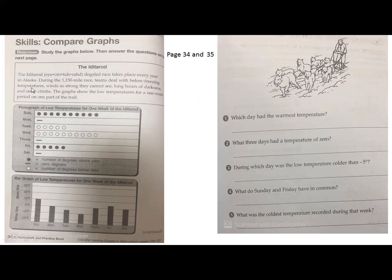Study the graphs below, then answer the questions on the next page. Now we're going to look at some information about the Iditarod, the dog sled race that takes place every year in Alaska. So during the 1,150 mile race, teams deal with below freezing temperatures. Brrr, let's send the spin, chill down my spine. That's very cold. And winds are strong, they cannot see long hours of darkness. And steep climbs, very adventurous. The graphs show the low temperatures for a one week period on one part of the trail.